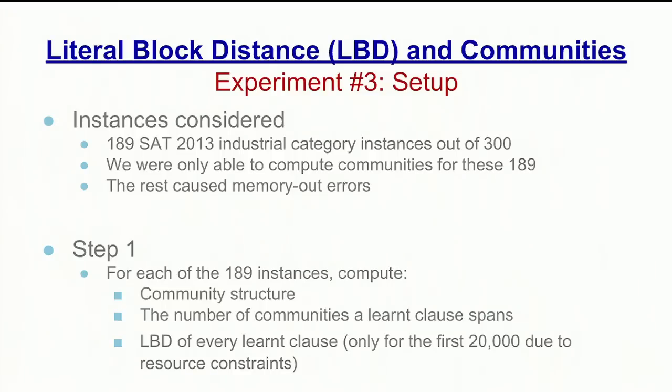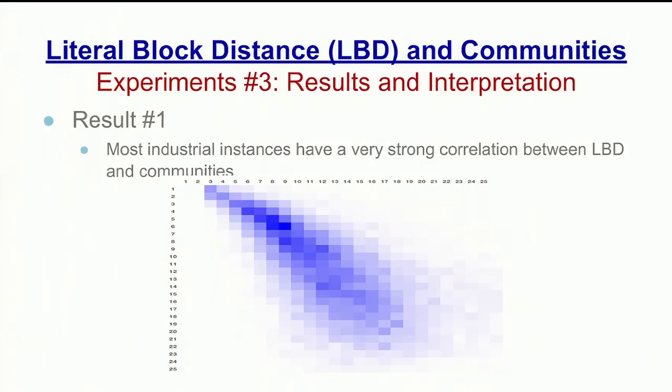We considered 189 industrial instances from the SAT 2013 competition out of a total of 300; for the remaining instances we encountered memory errors. For each of these 189 instances, we computed the community structure, the number of communities, and the LBD for each of the first 20,000 learned clauses. We used heat maps to analyze results — one heat map per instance — plotting the correlation between the number of communities and the LBD value of the learned clauses. The LBD measure is along the x-axis and the number of communities is along the y-axis, and as you can see, there is a very strong correlation between the two.